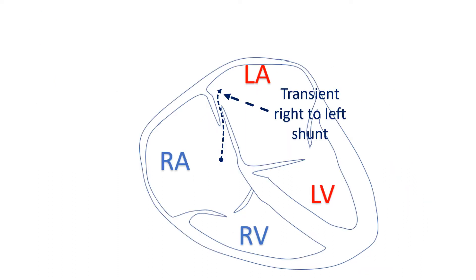But occasionally, as in straining, the pressure in the right atrium transiently rises above that in the left atrium, so blood can pass transiently from the right atrium to the left atrium across the PFO.